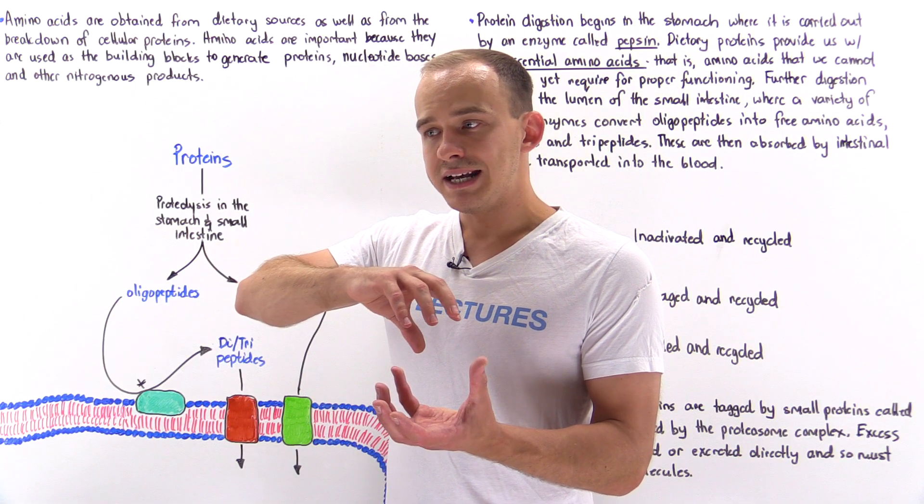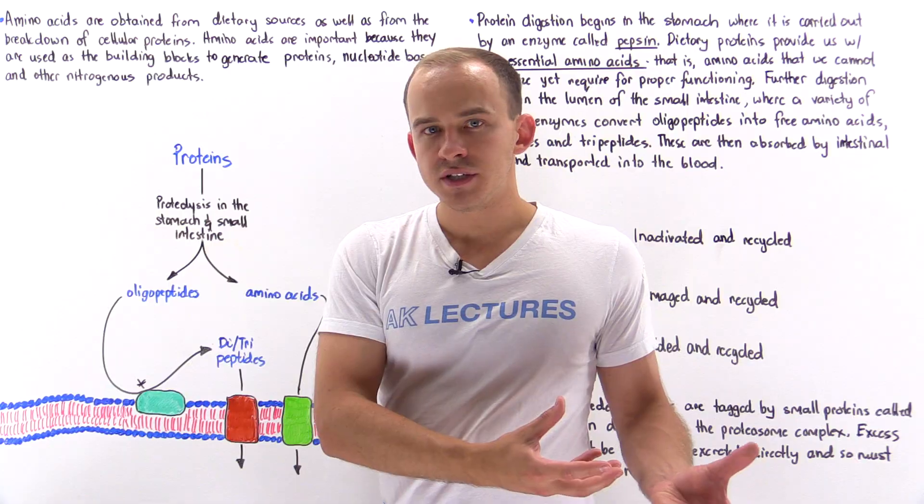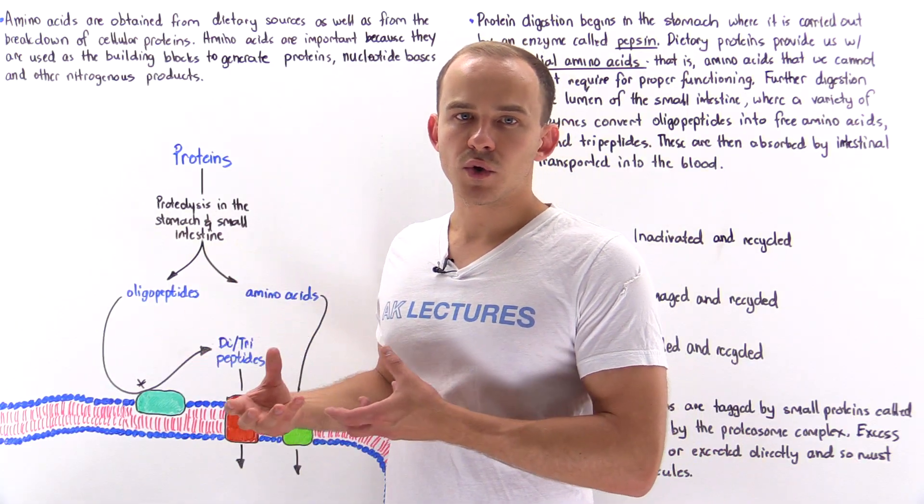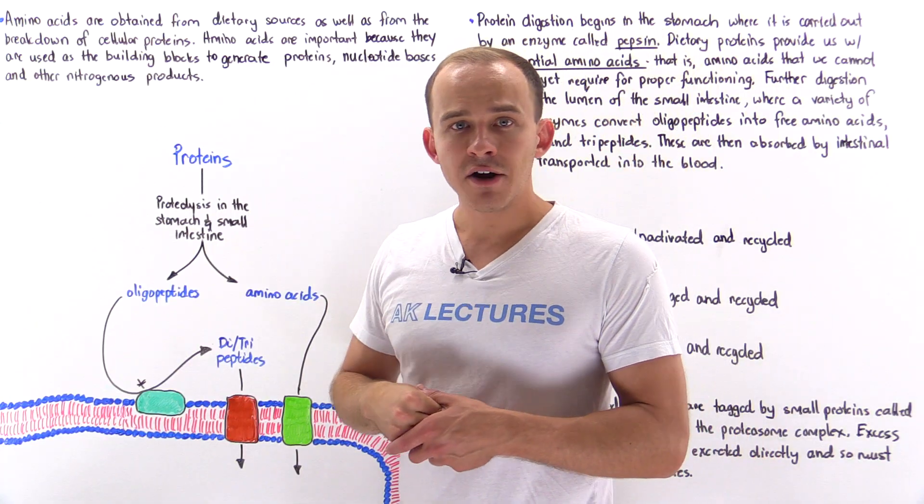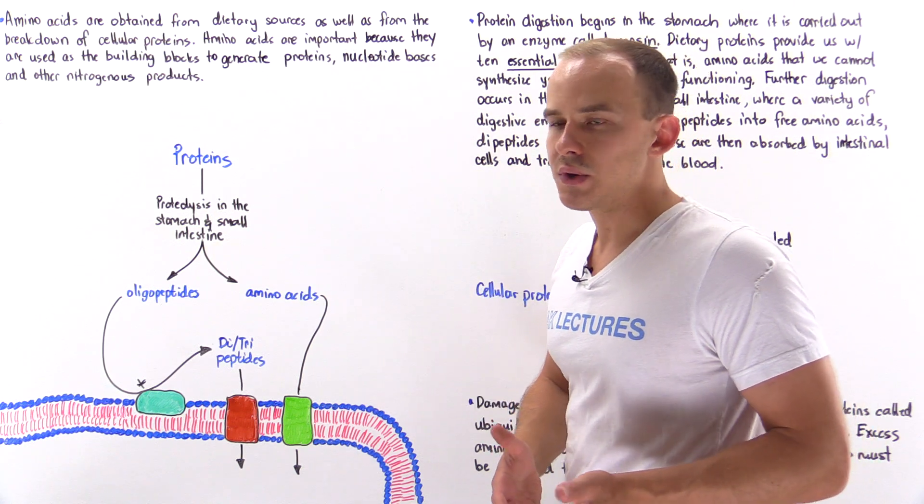It goes from being a very structured protein to a randomly coiled protein, which increases its surface area. Now the pepsin can act on that increased surface area and cleave, breaking down that protein into smaller protein molecules.